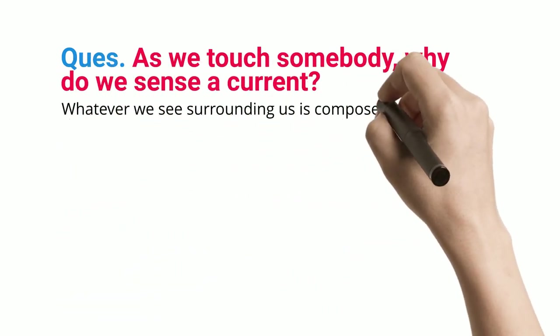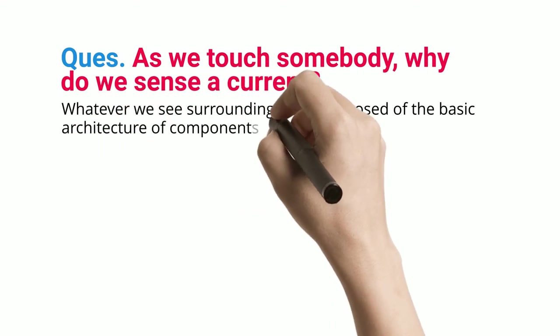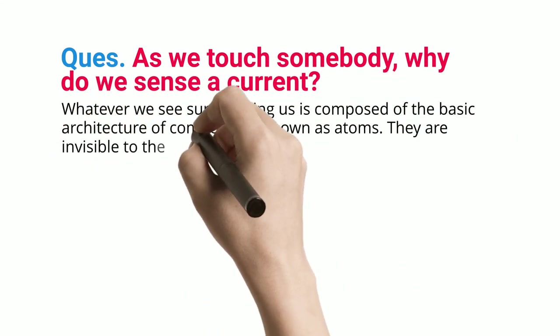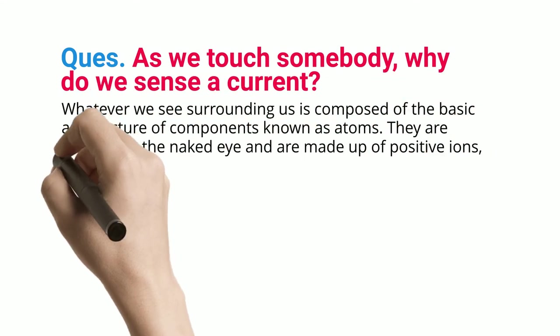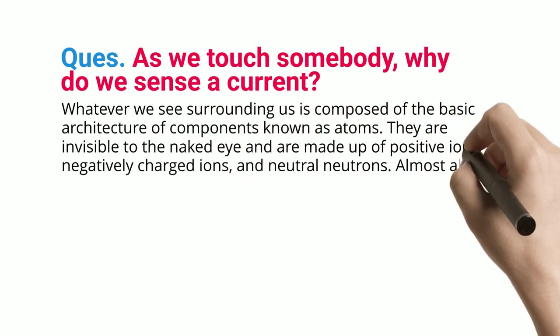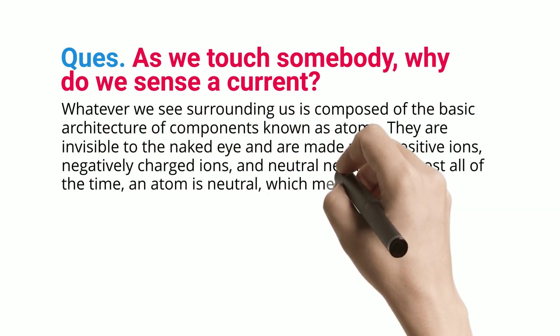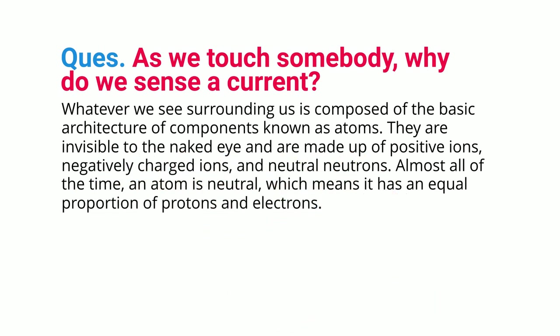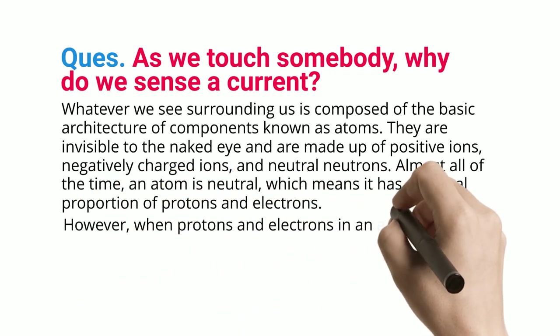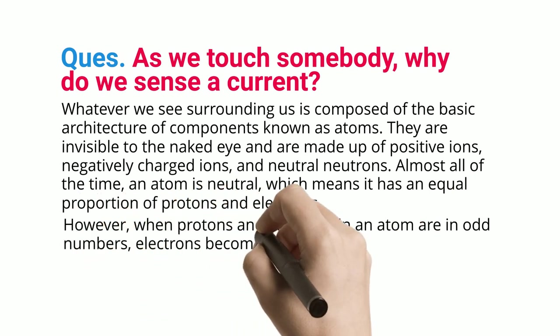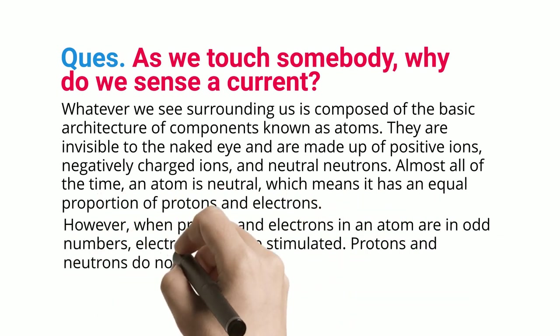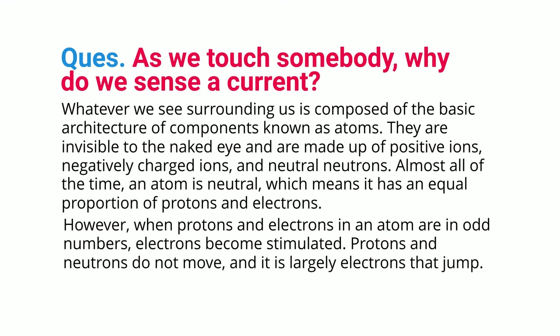Whatever we see surrounding us is composed of the basic architecture of components known as atoms. They are invisible to the naked eye and are made up of positive ions, negatively charged ions, and neutral neutrons. Almost all of the time, an atom is neutral, which means it has an equal proportion of protons and electrons. However, when protons and electrons in an atom are in odd numbers, electrons become stimulated. Protons and neutrons do not move — it is largely electrons that jump.